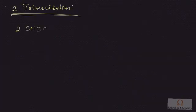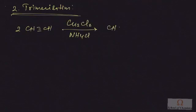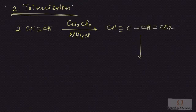So when two moles of acetylene join together in the presence of cuprous chloride and a little ammonium chloride, you get this product. This is vinyl acetylene.